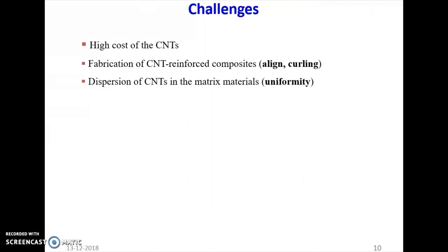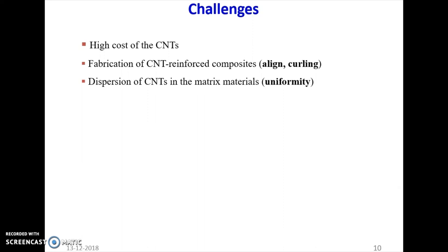Now the question is: we have discussed a lot of applications and advantages of CNT reinforced composite, but is there any challenges? Yes. There are some challenges such as high cost of CNT, though day by day the cost of CNT is reducing. Fabrication of CNT reinforced composite is also very difficult, because we need aligned CNT, but in most cases we find random orientation of the CNT. And if the length is very high, there is some possibility that the CNT will curl, and if it is curling, then it will break easily. So we need some improved technique for fabrication. Lastly, dispersion of CNT in the matrix material must be uniform — if it is not uniform, there is a possibility of failure at that particular place. So non-uniformity is also one of the challenges.